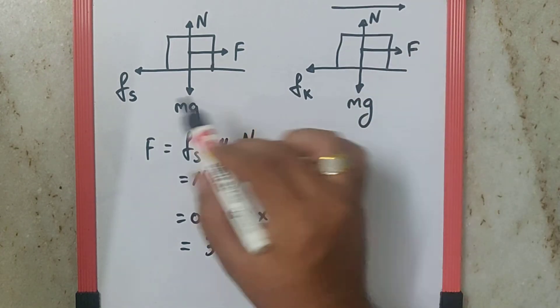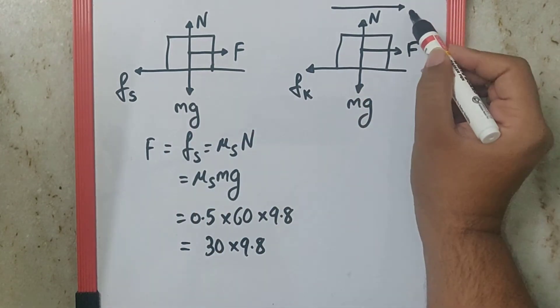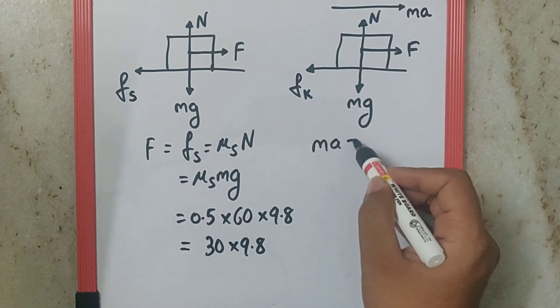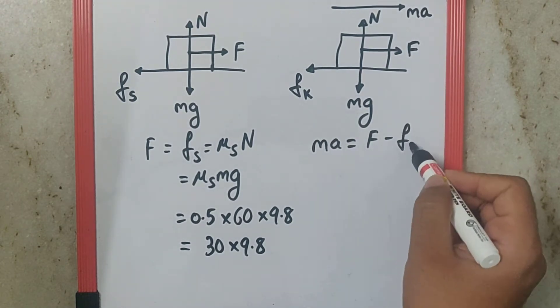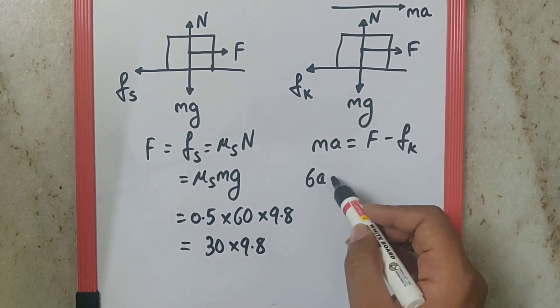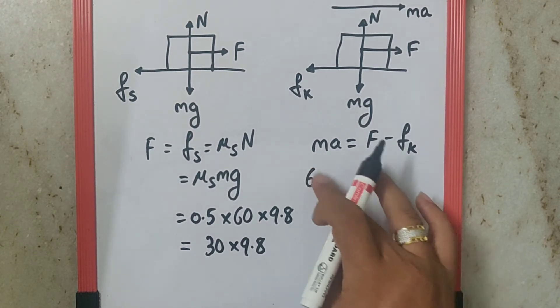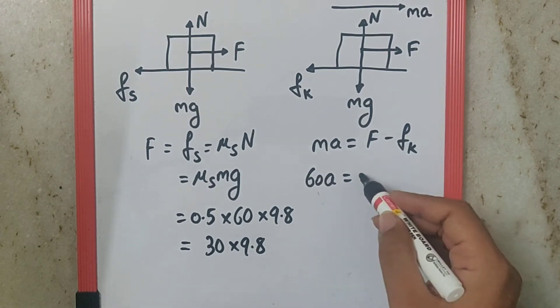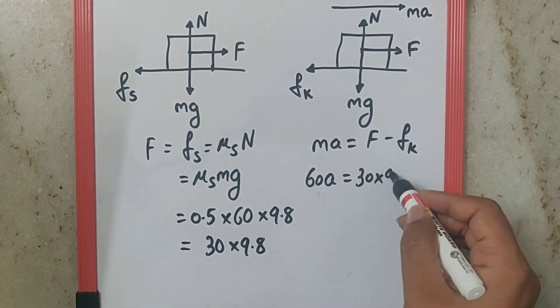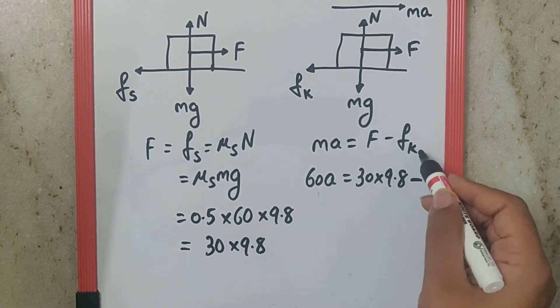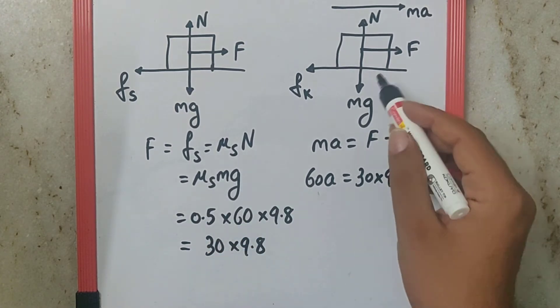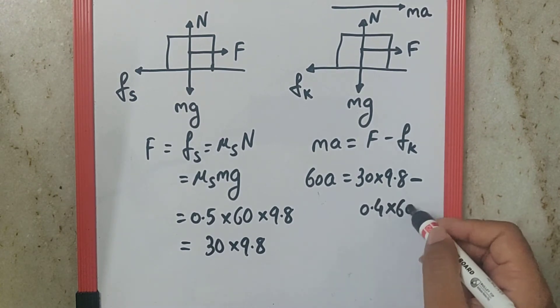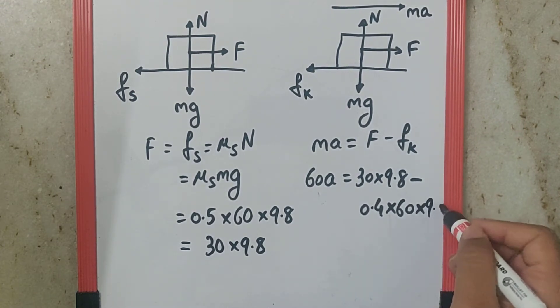Since Fk is going to be less than Fs, there will be motion which is Ma. So, here we can say Ma is equal to F minus Fk. Now, M is 60. F we got 30 into 9.8 minus Fk is going to be mu K mg, where mu K is 0.4, M is 60, G is still 9.8.